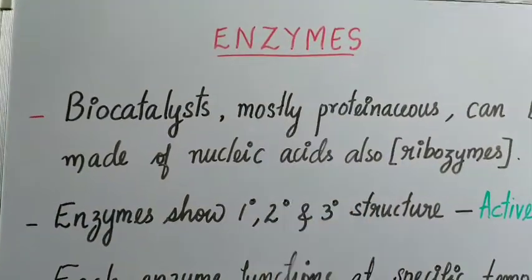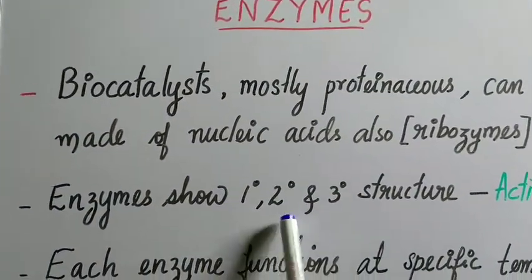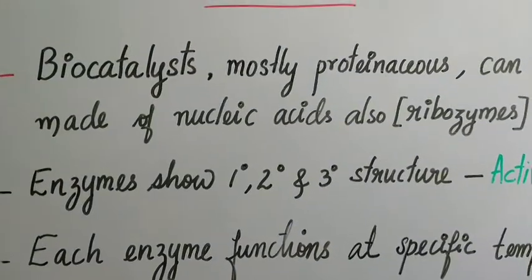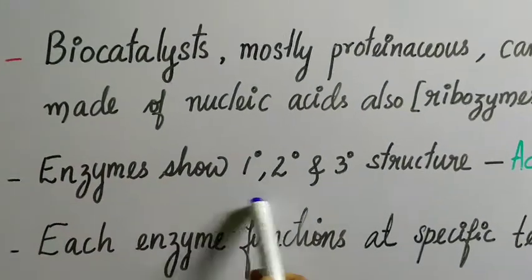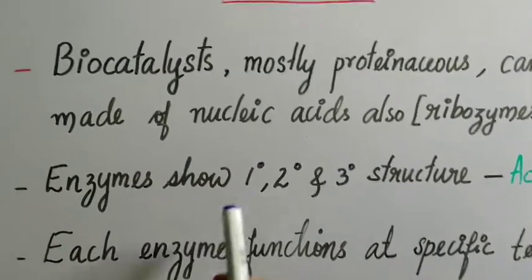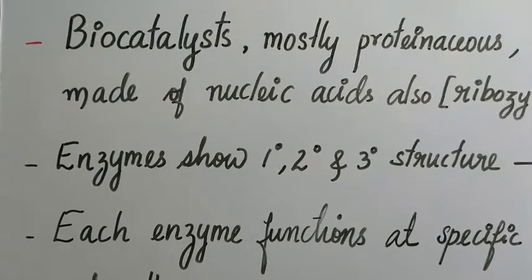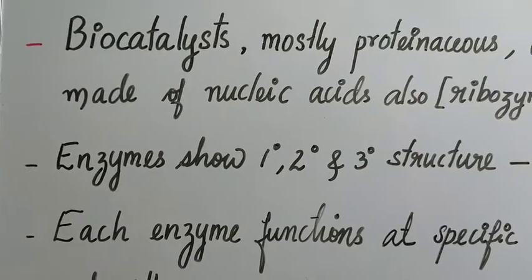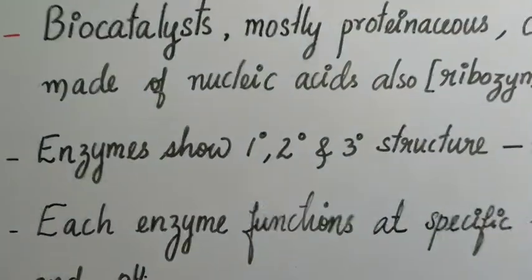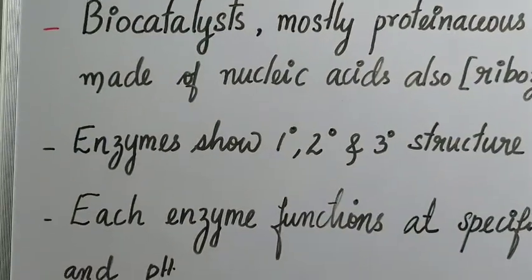Now these enzymes have a primary structure, secondary structure as well as a tertiary structure, just like any other protein. In primary structure, the normal alignment in a single straight line, the arrangement of amino acids and the number of amino acids are discussed. In secondary and tertiary structure, further higher levels of organization are discussed.